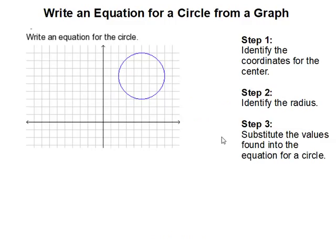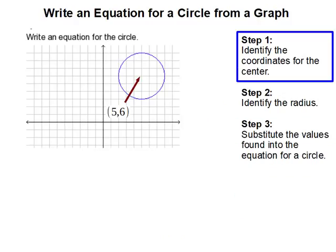Write an equation for a circle from a graph. Step 1: Identify the coordinates for the center. In this case, our center is at (5,6).